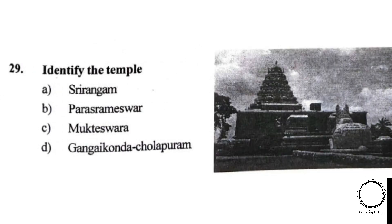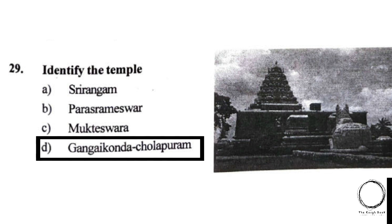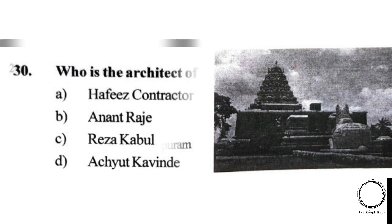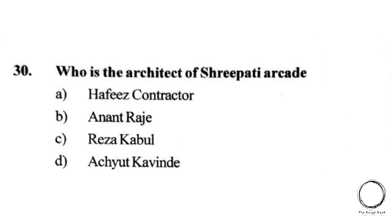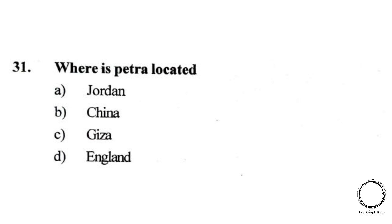Next: identify the temple shown in the image. Options: A) Srirangam, B) Parashurameshwara, C) Mukteshwar, D) Gangaikonda Cholapuram. The right answer is D, Gangaikonda Cholapuram. Next: who is the architect of Sripati Arcade? Options: A) Hafiz Contractor, B) Ananta J., C) Reza Kabul, D) Ayub Kandiwal. The right answer is C, Reza Kabul.